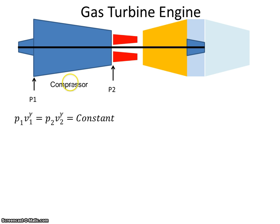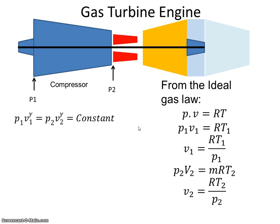So let's say I have an engine, I have a compressor and I know that P1V1 to the power of gamma equals P2V2 to the power of gamma. Now from the ideal gas laws, I know that P by V, which is a specific volume, equals RT.